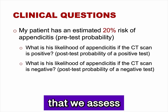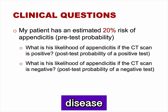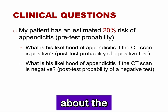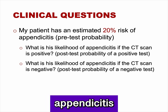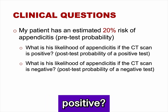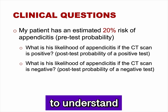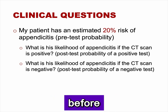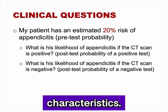We will start with a patient that we assess as having a 20% pretest probability of appendicitis. After assessing disease pretest probability and deciding which test to order, I find it helpful to think about the specific questions needed to make clinical decisions: what is the likelihood of appendicitis if the CT scan is positive, and what is the likelihood of appendicitis if the CT scan is negative? It is important to understand the impact of these answers on patient management before ordering the test.